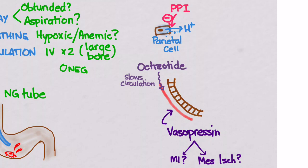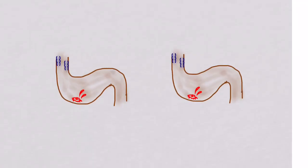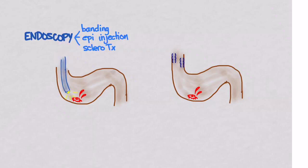Now let's talk about some other therapies. The next one, the reason we call GI, is endoscopy. If you can see the bleeding source with endoscopy, you have a couple options. You can do banding, epi-injection, and sclerotherapy.